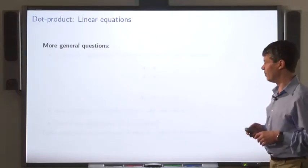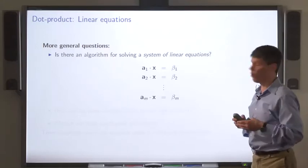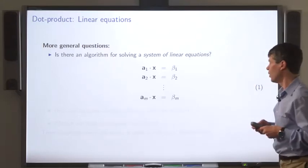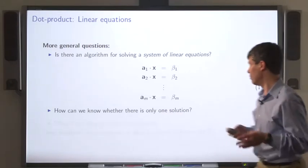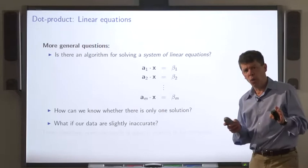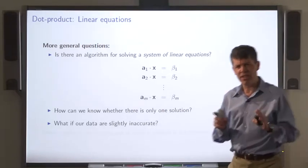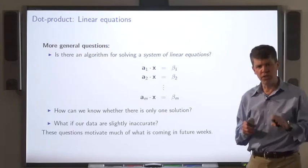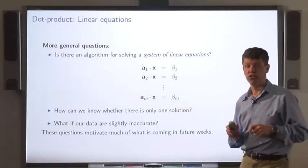So more generally, given a set of linear equations like this, called a linear system, how do we know if there's only one solution? And what if our data are slightly inaccurate? Can we nevertheless get a solution that's very close to the true solution? So we'll have to wait on these questions.